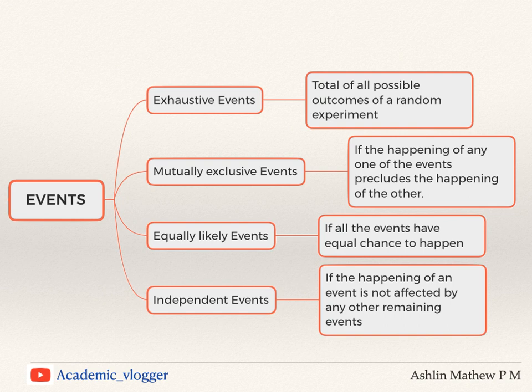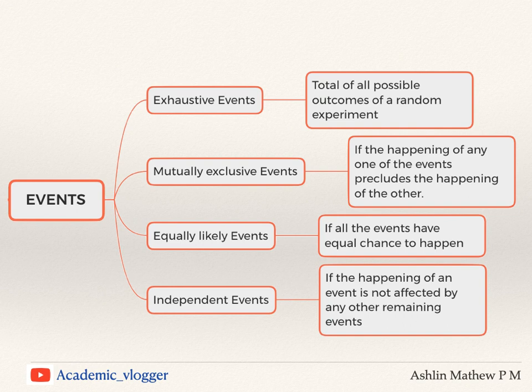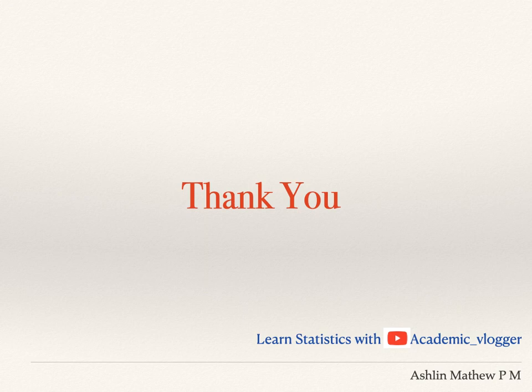There are other events as well, such as favorable events, which can be defined as the number of cases favorable to an event. So I have covered some of the important types of events: exhaustive events, mutually exclusive events, equally likely events, and independent events. I hope this video is useful.